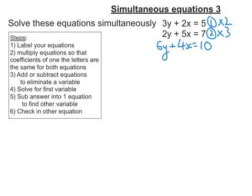Let's do the same for the next one. 2y times 3 is 6y, plus 3 times 5x is 15x, and 7 times 3 is 21.